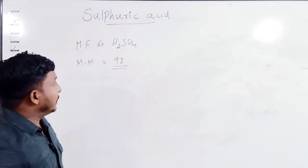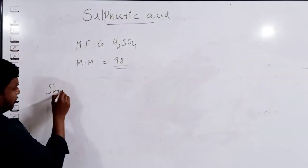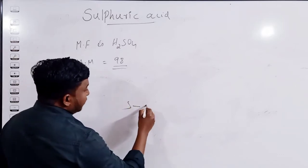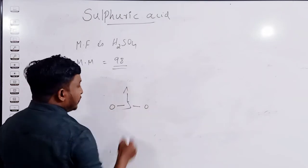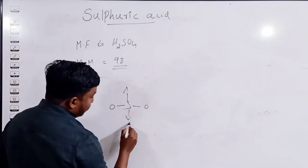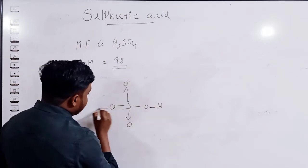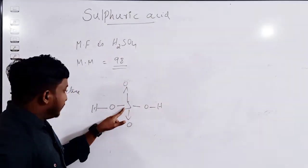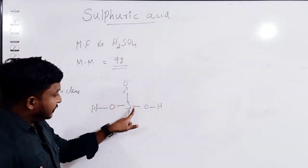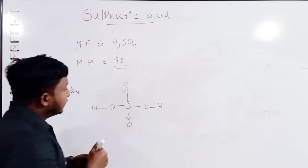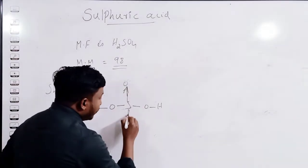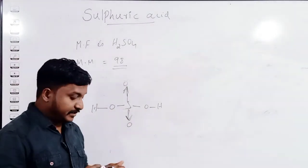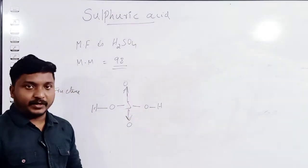Now we can see the structure of sulfuric acid. Sulfur will be the central atom. Four oxygen atoms surround sulfur, and two hydrogen atoms are attached. Sulfur is bonded with one oxygen atom by a double bond, another oxygen atom by another double bond, and then bonded with two more oxygen atoms by coordinate bonds — each of those oxygen atoms is bonded with one hydrogen atom.